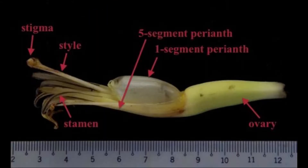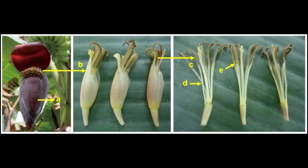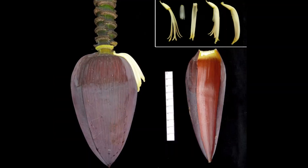Female flowers consist of a prominent ovary, stigma, and inferior stamens. Male flowers are arranged within the bract in clusters in two rows; male flowers consist of an inferior ovary and stigma, and stamens are prominent. Female flowers parthenocarpically develop into fruits by enlarging the prominent ovary. Male flowers do not develop into fruits and remain within the bract.